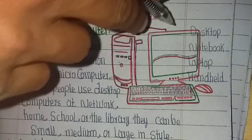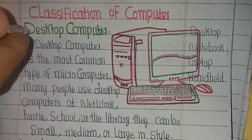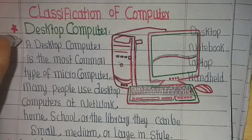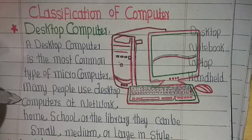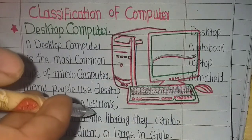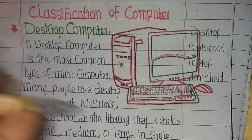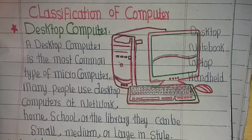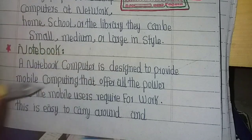There are four types of microcomputers: desktop, notebook, laptop, and handheld computers. A desktop computer is the most common type of microcomputer. Many people use desktop computers at home, schools, or the library. They can be small, medium, or large in style.